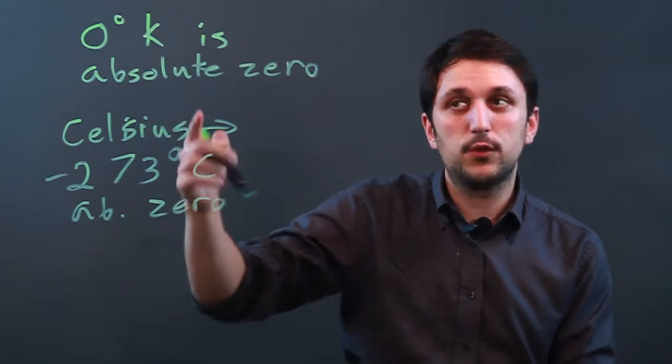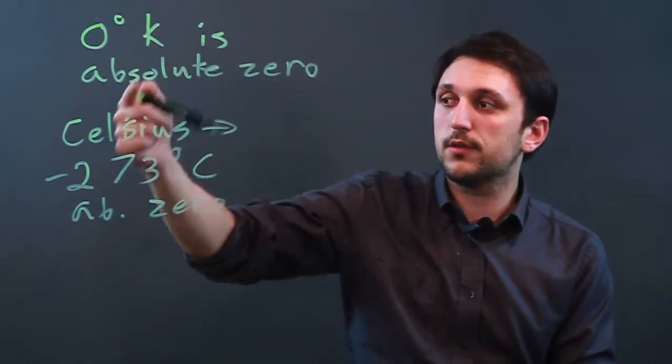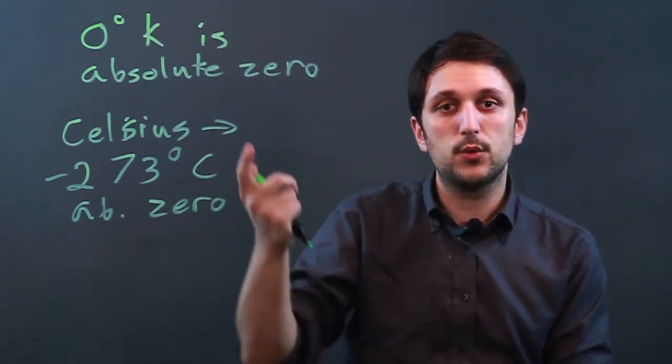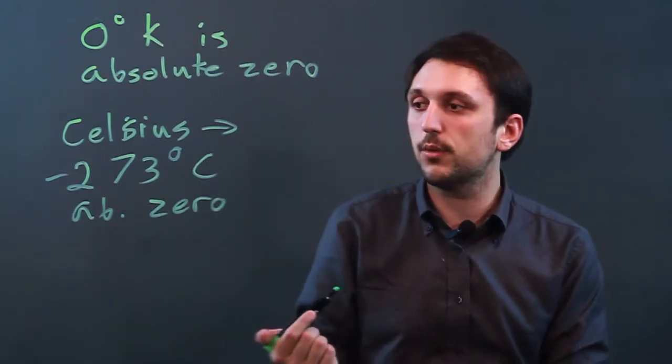So if you want to convert Kelvin to Celsius, we know that zero degrees Kelvin is negative 273 degrees Celsius. So whatever temperature you have in Kelvin, to convert it to Celsius, we just add 273.